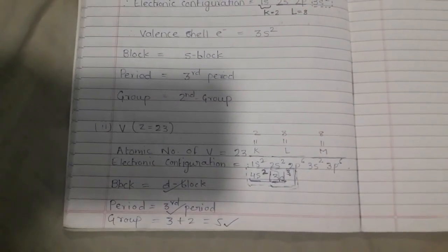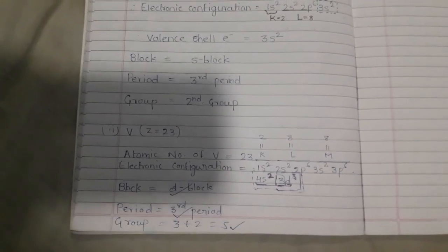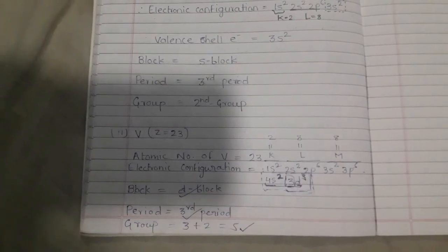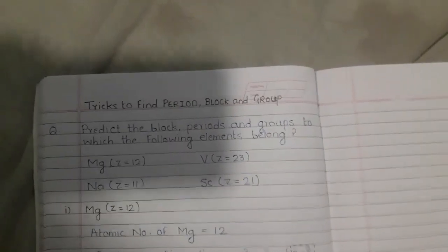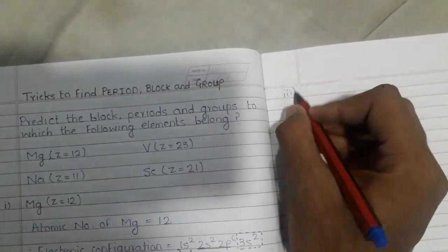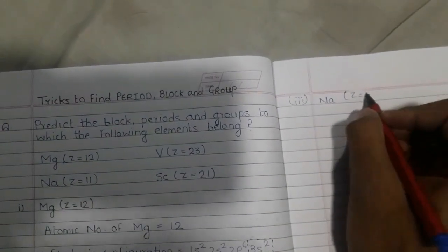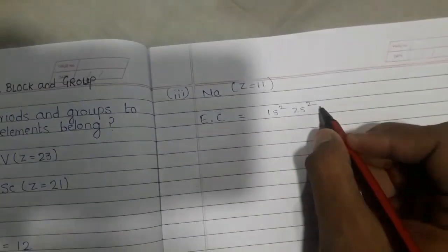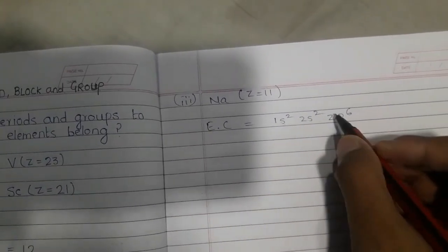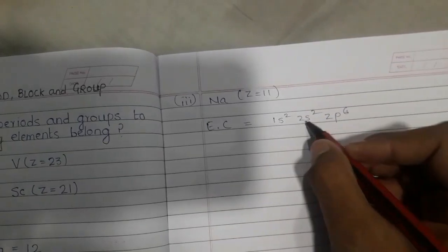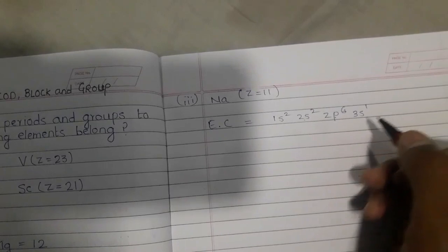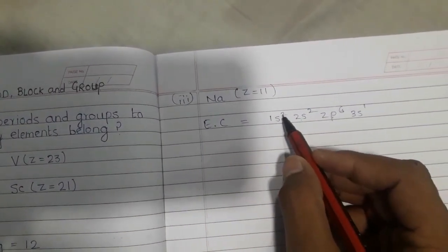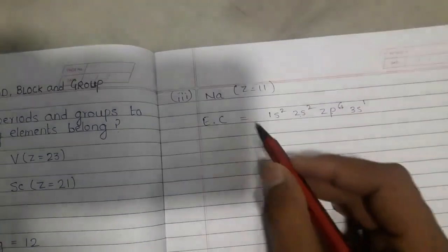If you know this trick, you can calculate it in 5 seconds. I am explaining step by step, that's why it takes time, but once you know the trick you can find it in 5 to 10 seconds. The third element is sodium, which has atomic number 11. We will directly write the electronic configuration: 1s2 2s2 2p6 3s1.